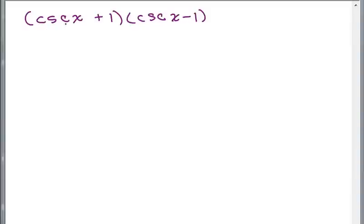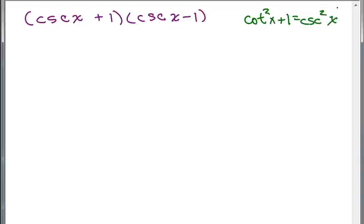Here's our next problem: cosecant of X plus 1 times cosecant of X minus 1. One way of doing many of these problems is putting everything in terms of sines and cosines, and we'll do that later. But let's use the Pythagorean identity. The one that has cosecant is: cotangent squared X plus 1 equals cosecant squared X. I don't have cotangent squared X or cosecant squared X directly, but notice this is the product of two binomials — a difference of two squares — so using FOIL I get cosecant squared X minus 1.